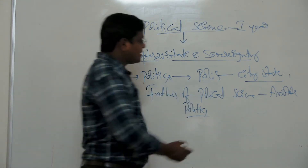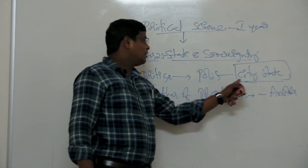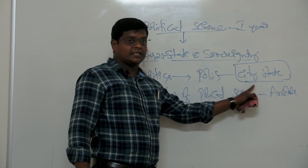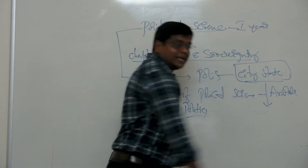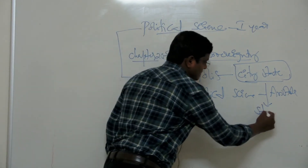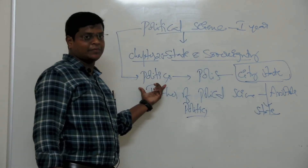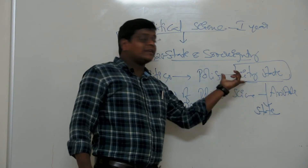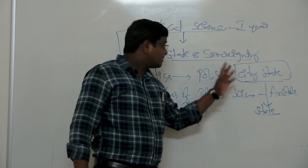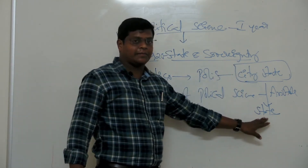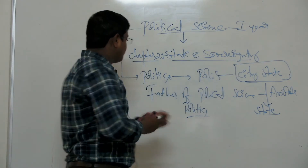The subject matter of political science is nothing but city-states. The term 'political science' is derived from the Greek word 'polis,' which means city-states. City-states are nothing but what we call 'state' today. In the Greek period, the word 'state' was not used — they treated the state as city-states. All city-states were very small in size and population. The subject matter of political science is the state, so let us go to State and Sovereignty.